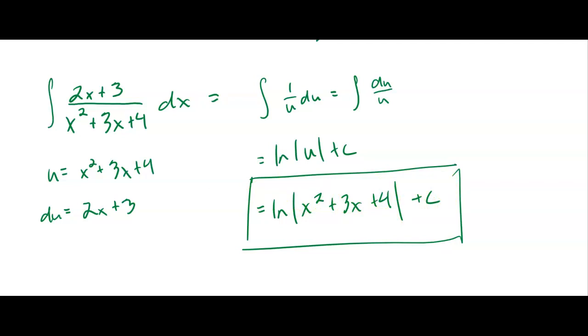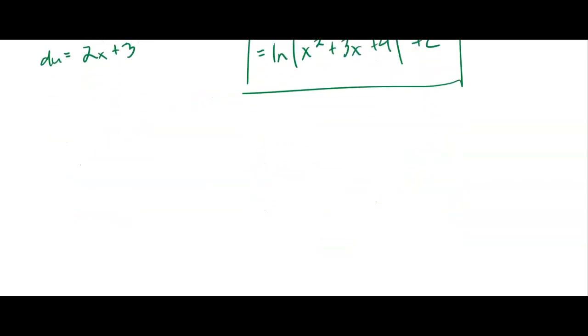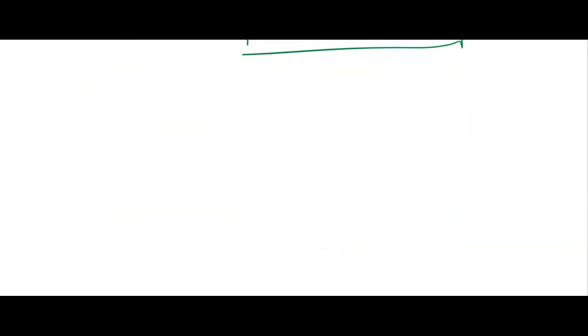All right, I'm going to have you do one more that's similar to that. So let's go ahead. We're going to do the integral, fraction bar, top x plus 2, bottom x squared plus 4x minus 5 with a dx on the outside. So I would like you to go ahead and do the u sub on this one, just like you did on the last one. It's got a little bit different piece, but totally doable. Hit pause.